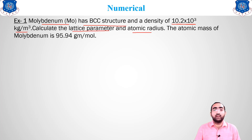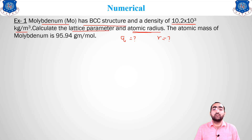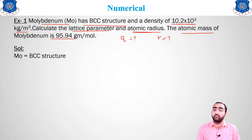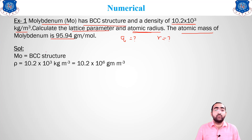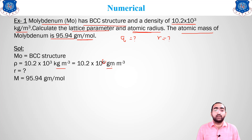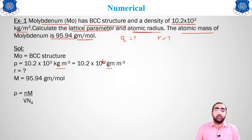We have to find out the lattice parameter 'a' (the side of the cube) and the atomic radius. The atomic mass of molybdenum given is 95.94. Converting units: density is 10.2 × 10⁶ g/m³. There is one formula: ρ = nM / (V · Nₐ), where ρ is density, n is number of atoms per unit cell, M is molecular mass, V is volume, and Nₐ is Avogadro's number.